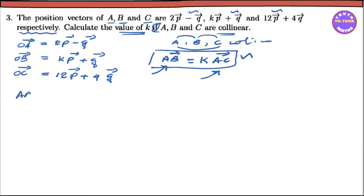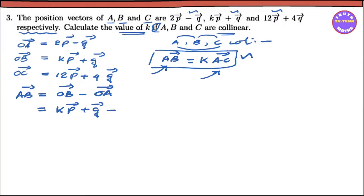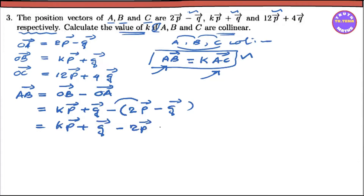AB vector equals — AB vector is the position of the formula. AB vector is negative OA vector. AB vector is the same as OB vector plus q vector, negative OA. So we can write it as AB vector: 2b vector negative q vector. Or you can write it as KB vector plus q vector.